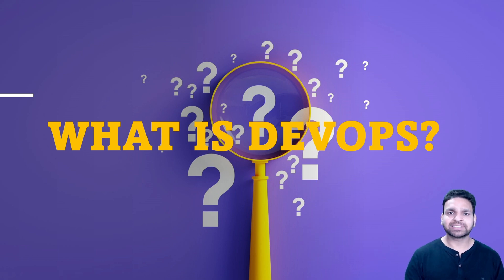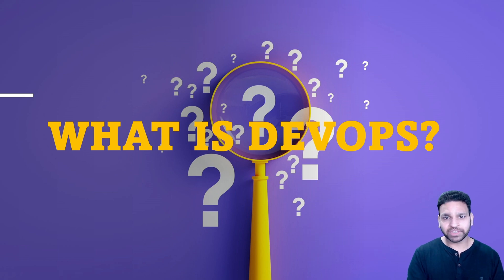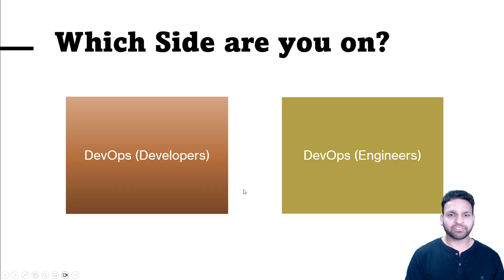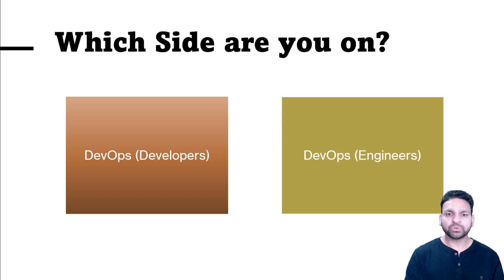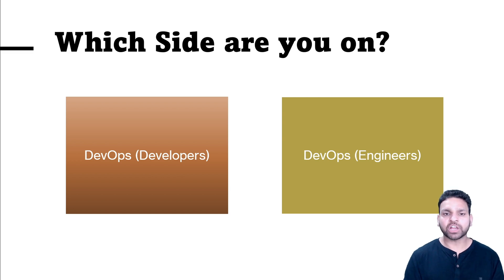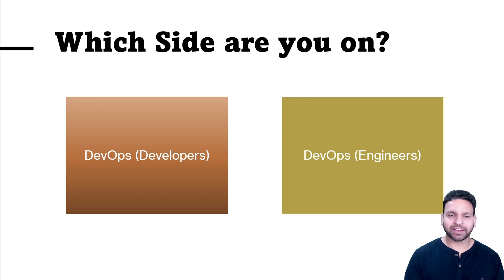The expectation is that a single DevOps engineer should know the programming language, how the application will be deployed and configured, and the infrastructure. But this is an ideal scenario — in the real world this doesn't happen. So DevOps is divided among two profiles: DevOps for developers and DevOps for engineers. With the introduction of DevOps, the middle layer — the application administration — is completely gone. Developers should now know how to create code and deploy it using CI/CD pipelines, and engineers who used to manage infrastructure should now know how to build, test, and deploy code and manage server configuration.